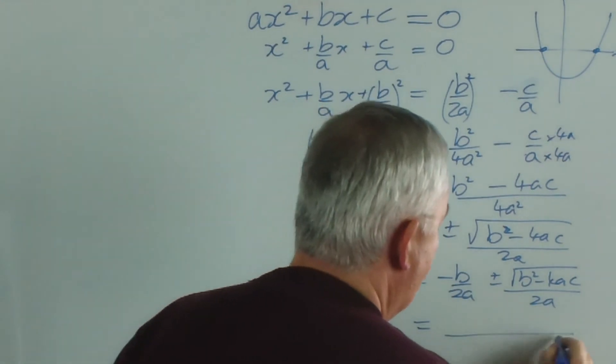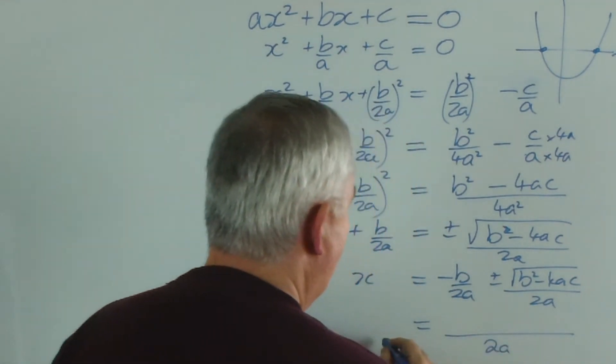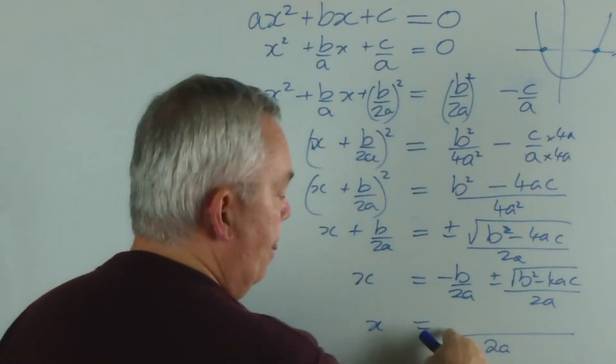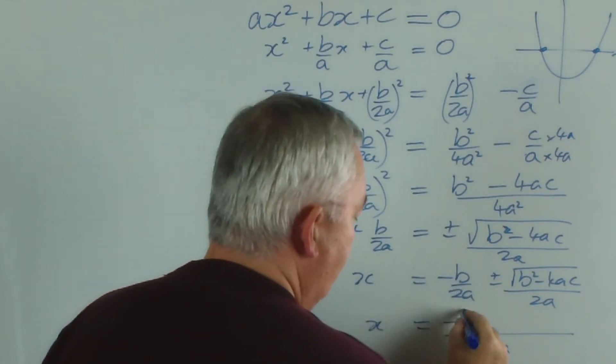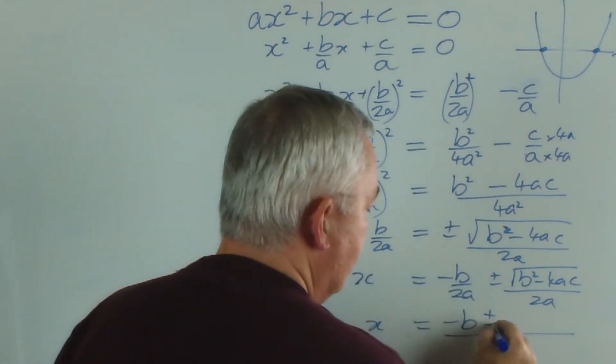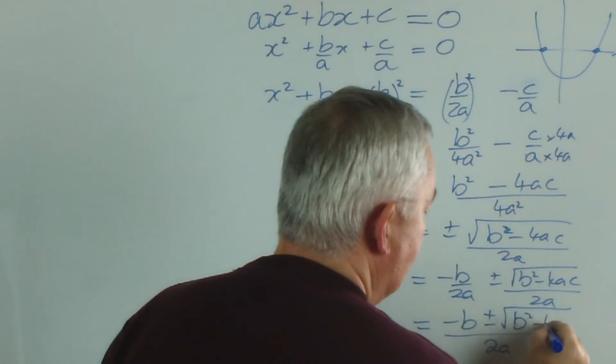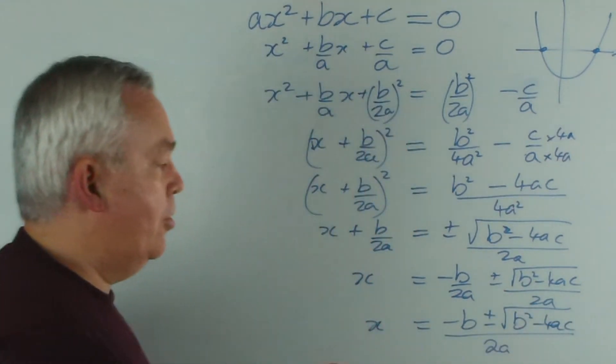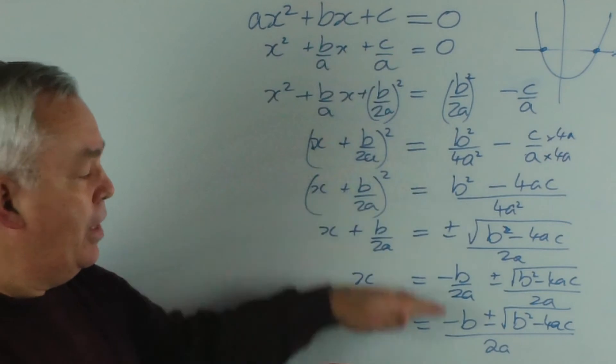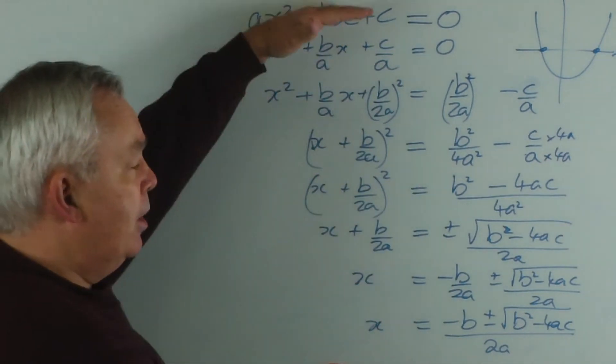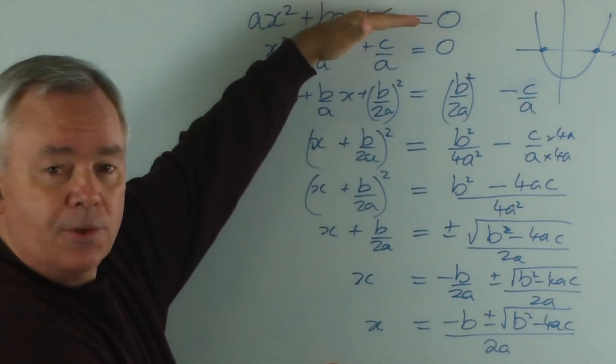And because these do have the same coefficient, I can put them into the one expression. So it's x equals minus b plus or minus the square root of b-squared minus 4ac all over 2a. And there it is.